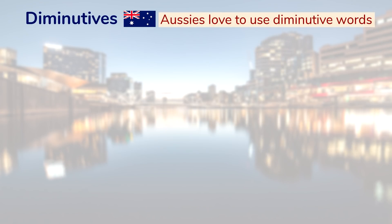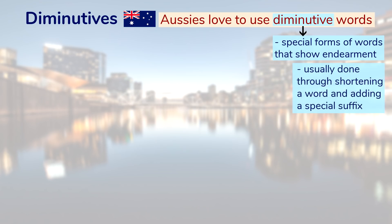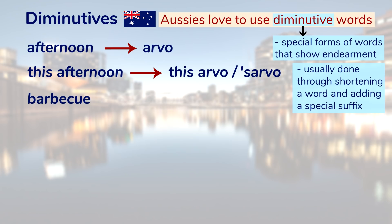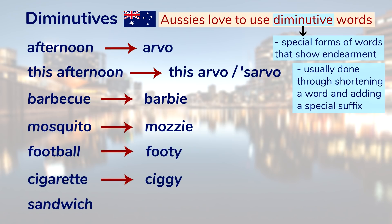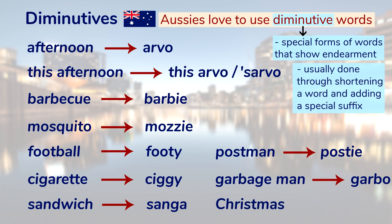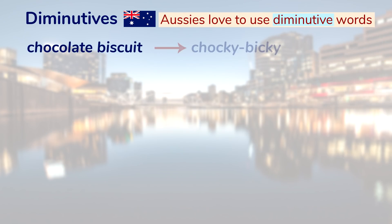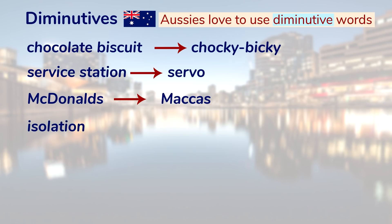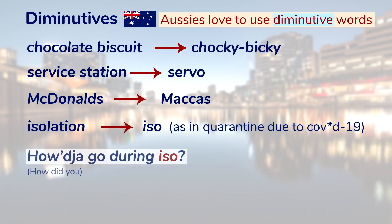Aussies love to use diminutive words — special forms showing endearment, usually by shortening a word and adding a suffix. Afternoon becomes 'arvo'; this afternoon becomes 'disarvo' or 'sarvo.' Barbecue becomes 'barbie'; mosquito becomes 'mozzie'; football becomes 'footie'; cigarette becomes 'ciggy'; sandwich becomes 'sanger'; postman becomes 'postie'; garbage man becomes 'garbo'; Christmas becomes 'Chrissy'; chocolate biscuit becomes 'choccy bicky'; service station becomes 'servo'; McDonald's becomes 'Maccas' — ubiquitous throughout Australia; and isolation becomes 'ISO,' as in COVID-19 quarantine: 'How'd you go during ISO?'